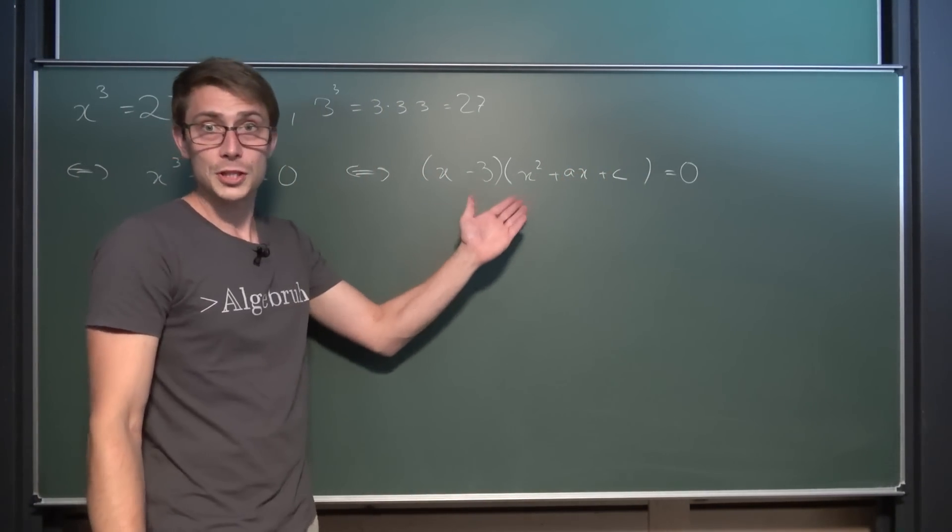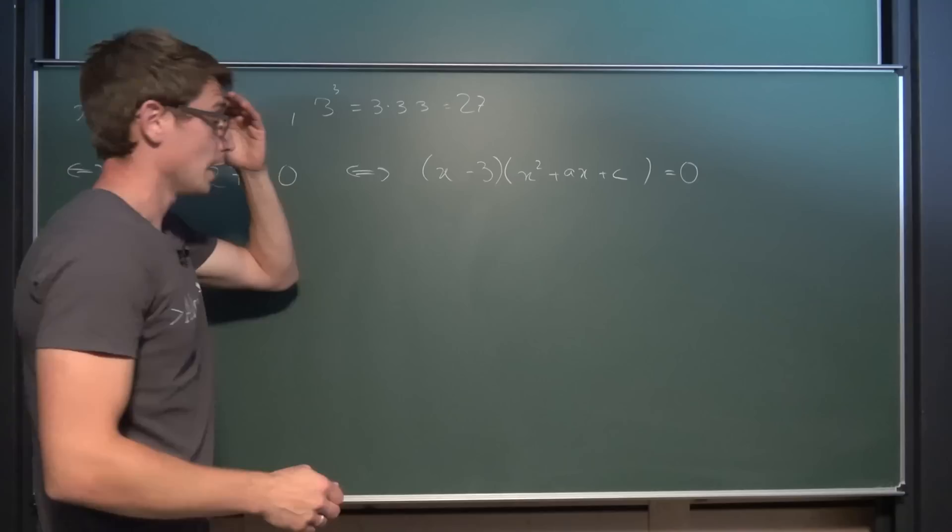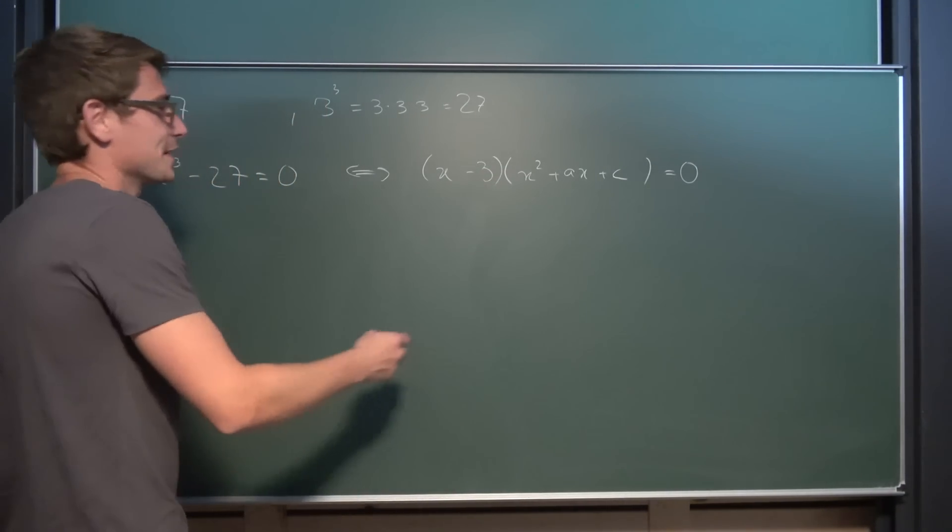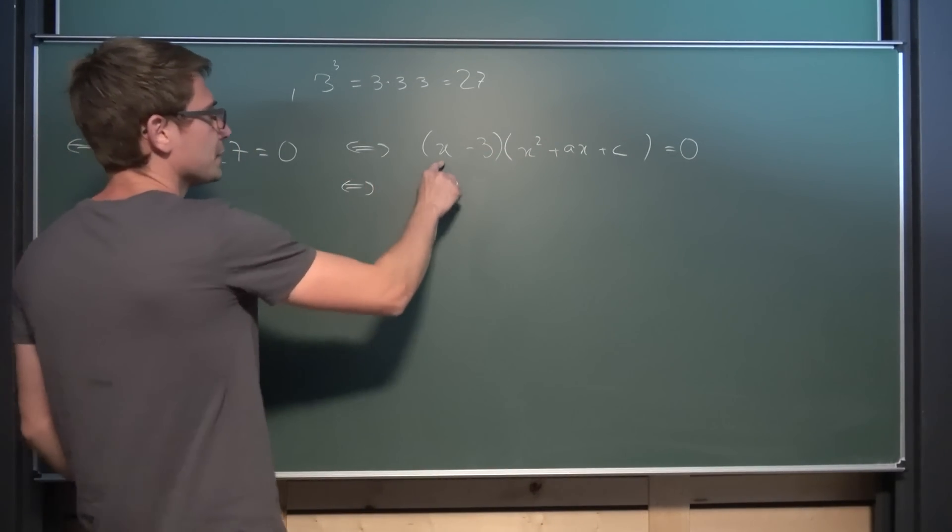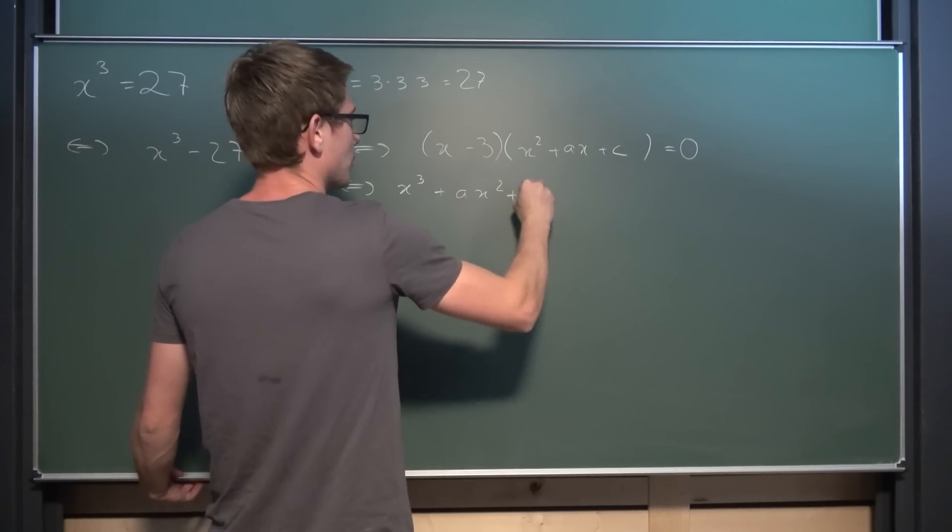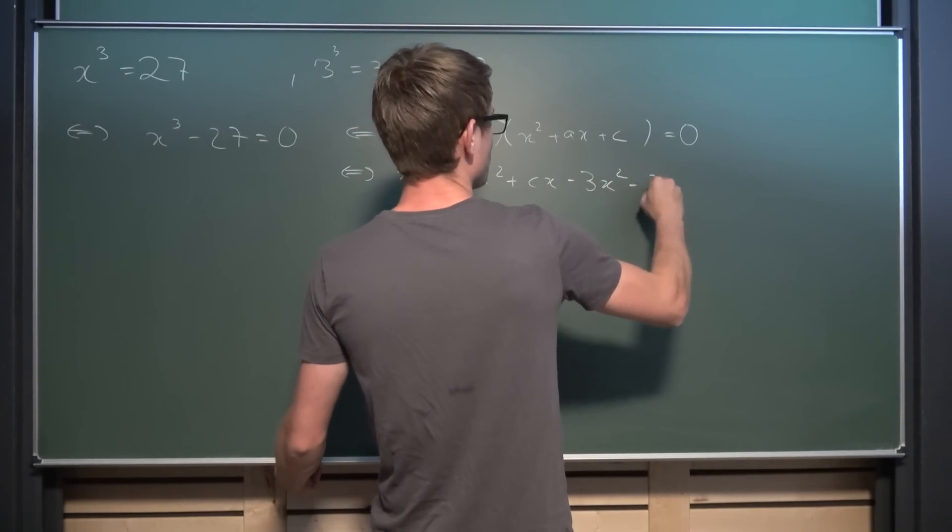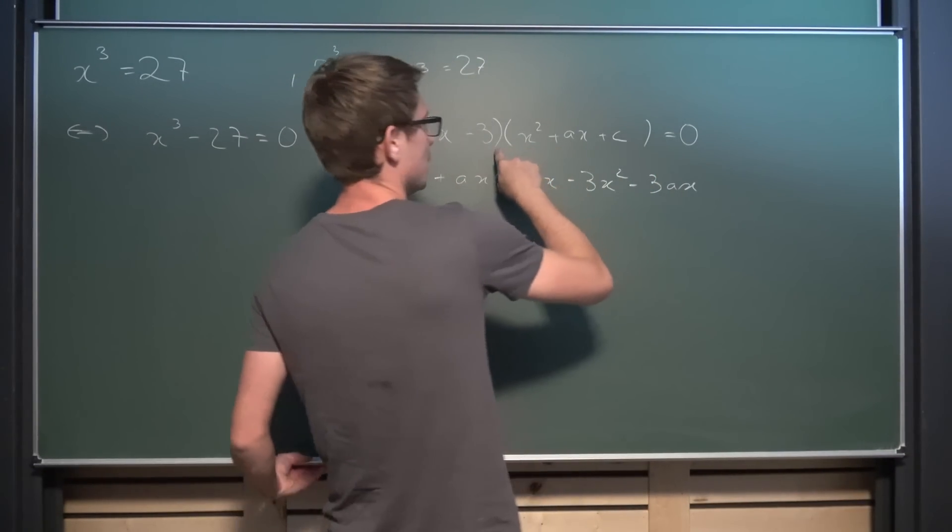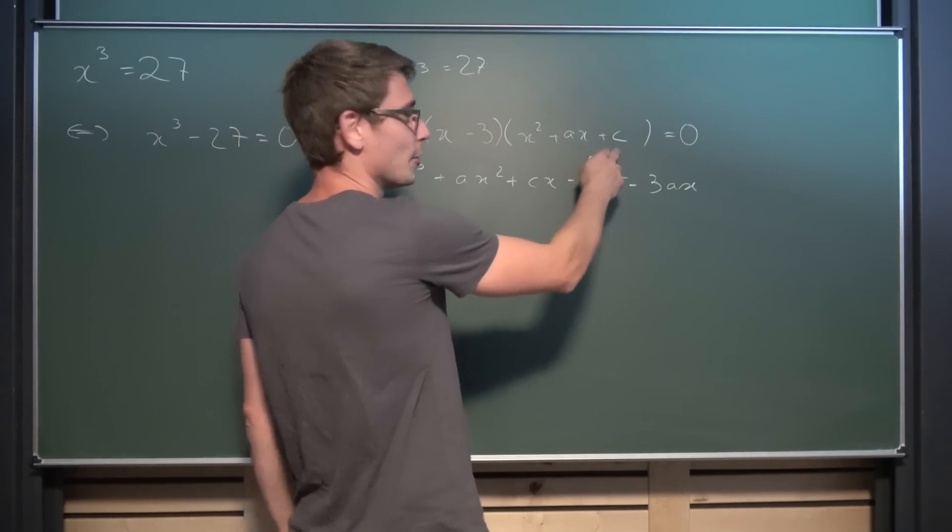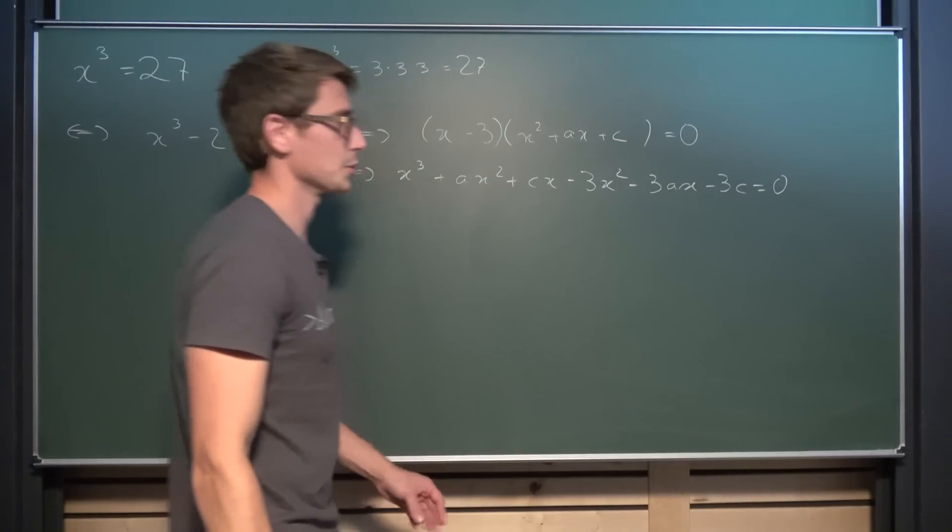You could do polynomial division obviously, but I'm going to go this route because this is what I always do. I always forget how to do polynomial division so I'm doing this stuff here. It gets you there too so that's nice. Now we are going to multiply everything out leaving us overall with x cubed plus ax squared plus c times x minus 3x squared and then minus 3 times a times x. And then why have I chosen c right here? Doesn't matter, this probably triggered a bunch of you guys right? Because it's the third thing in here hence c I suppose. Minus 3c is equal to zero.